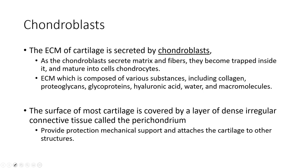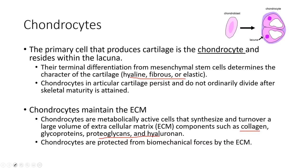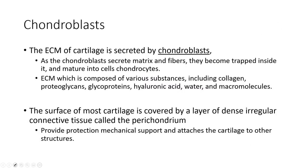The ECM is composed of various substances. Chondroblasts help create the ECM — they secrete the cartilage matrix. Chondrocytes help maintain it; they're the active cells contained within the lacuna. The surface of most cartilage is covered by a dense irregular connective tissue called the perichondrium, which provides mechanical support and attaches the cartilage to other structures. The ground substance for cartilage is chondroitin.